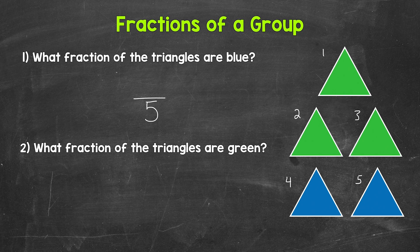Now we need what fraction of that total amount of triangles are blue. Here's 1 blue triangle, and here's 2 blue triangles. So 2 out of the 5 triangles are blue. 2 is our numerator. So what fraction of the triangles are blue? 2 fifths.